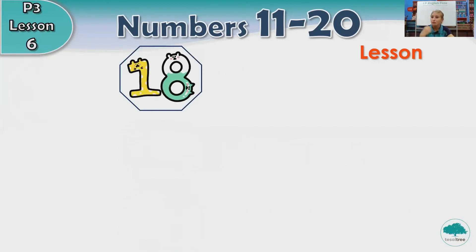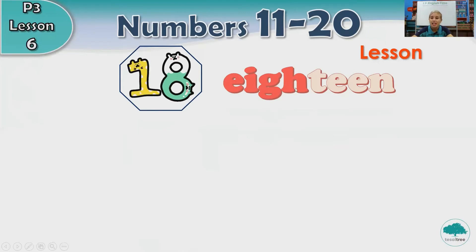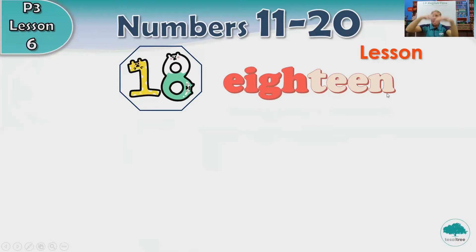After 17 comes number 18. How do we spell 18? Let's spell together. E-I-G-H-T-E-E-N. 18.